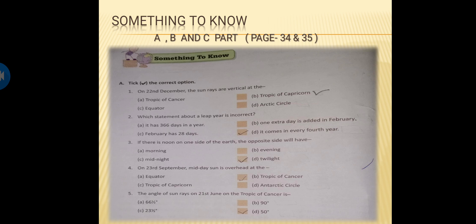Now come to question number 5. The angle of the sun ray on 21st June on the Tropic of Cancer is, Tropic of Cancer on the 21st June, that is 23 and half degree north. So what is the degree? 23 and half degree. Clear? So C option is the correct answer.